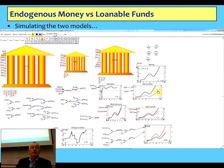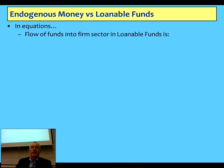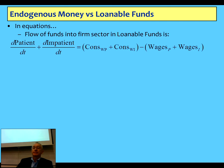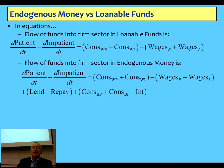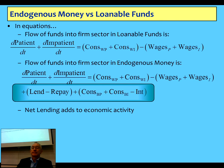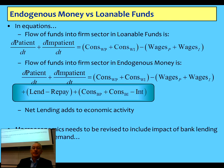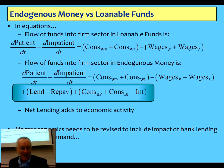Banks, debt, and money do matter. To summarise with equations: the flow of funds into the firm sector in loanable funds comes down to one sum; the flow of funds in endogenous money is a different sum. The difference is net lending plus the impact of the financial sector. So we have to revise macroeconomics to include that impact on effective demand. Let's take a break there — I might go and get an injection of vitamin C, you guys can get some coffee, and we'll keep on going after that.